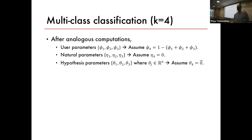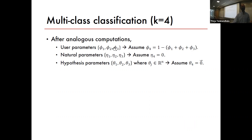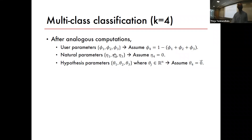Multiclass logistic regression assumes output is categorical. After computations very similar to the binary logistic regression GLM template, we get user parameters P1 through P_{k-1}, where each natural parameter eta_i is related to theta_i-transpose x. The hypothesis parameters theta one, theta two, theta three are each vectors — each of dimension equal to the number of features. We assume the last theta vector (for the last class) is the zero vector.